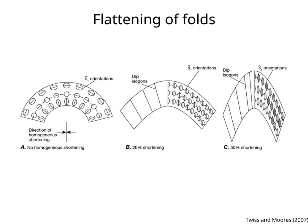After forming, folds can be modified by pure shear. Figure A shows a class 1B fold formed by orthogonal flexure.